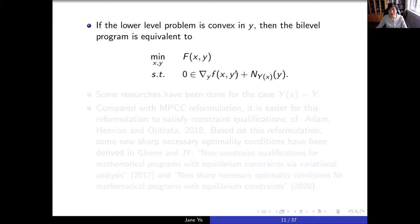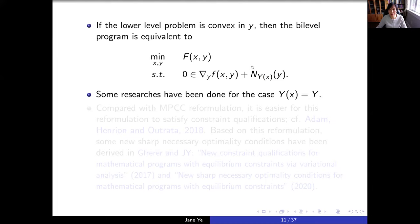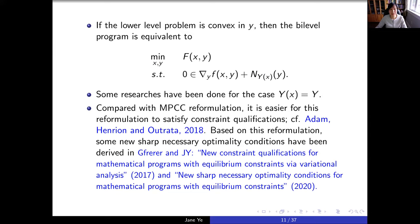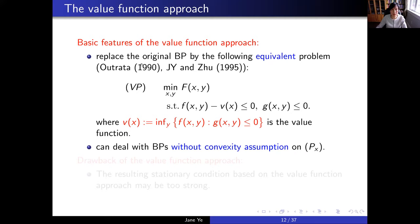There are other reformulations. For example, you can reformulate the lower-level problem using the B-stationary condition. The normal cone may be hard to deal with, but some research has been done when the constraint for the lower level is independent of x. Compared with the MPCC reformulation, it is easier for this formulation to satisfy constraint qualifications, and new sharp optimality conditions have been derived based on it.